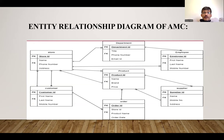Here we are going to discuss about the entity relationship diagram of the AMC. There are seven entities: store, department, employee, product, customer, order, and supplier.